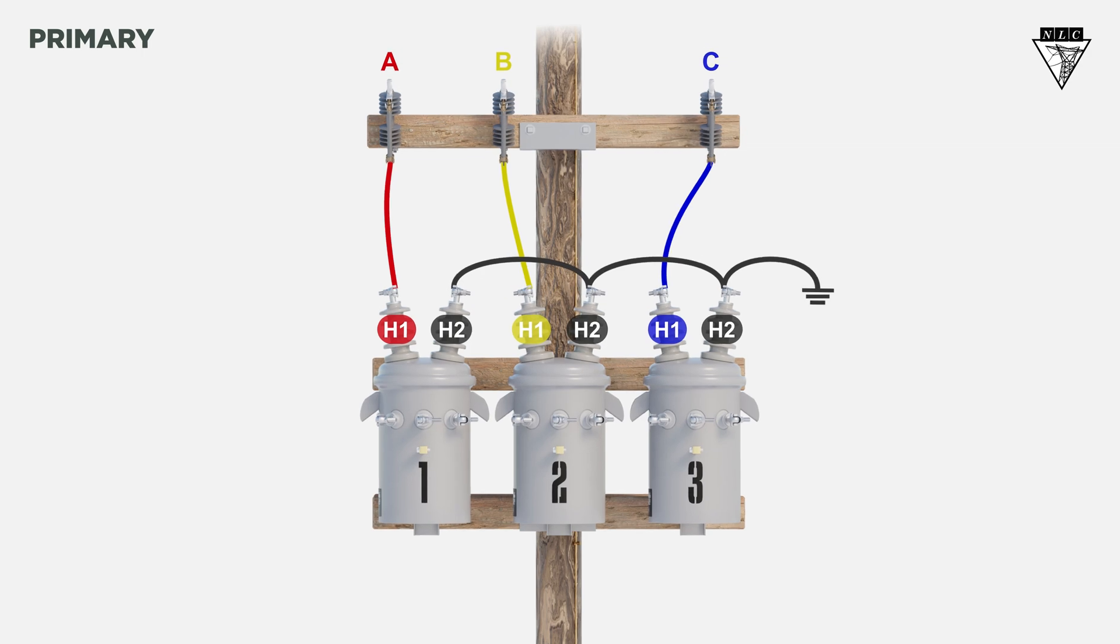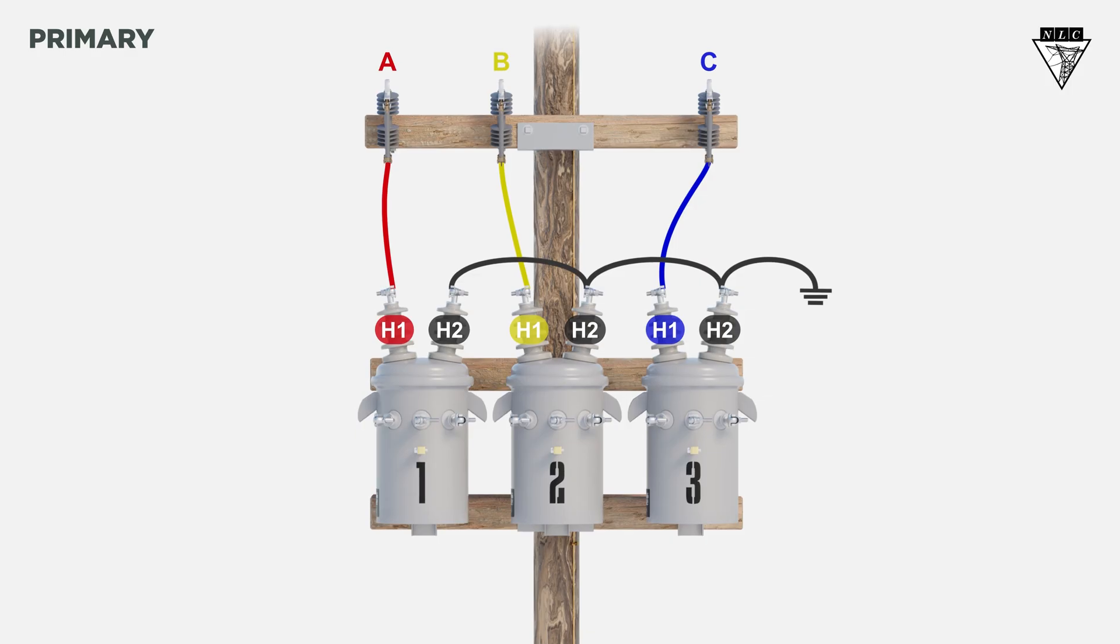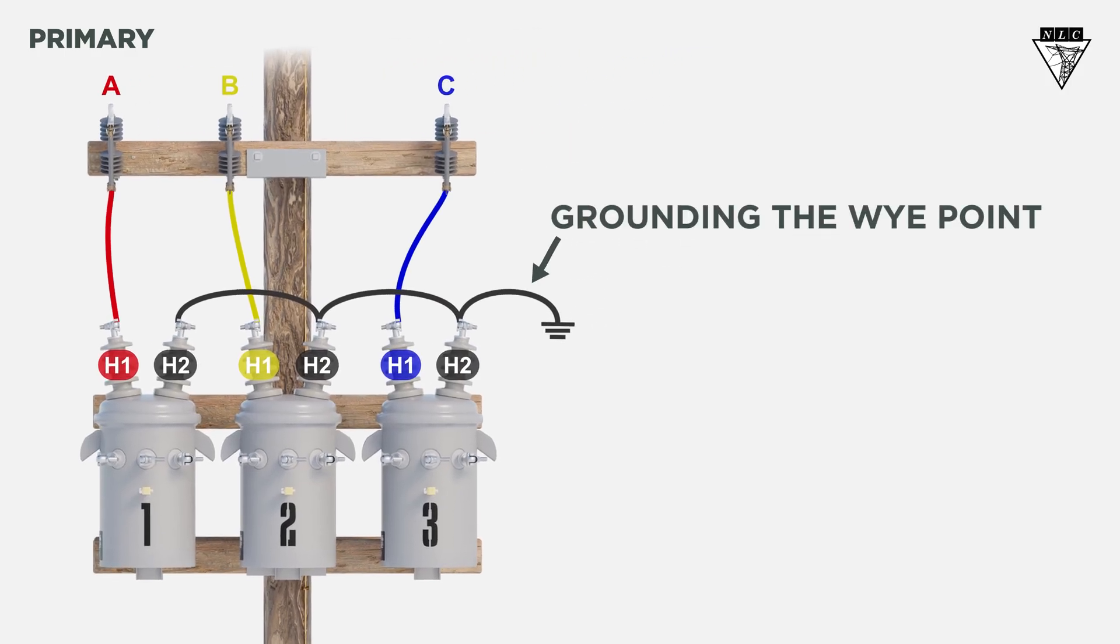Notice how each transformer in a YY bank is connected to a phase, and then grounded to a neutral. We call this grounding the Y point.